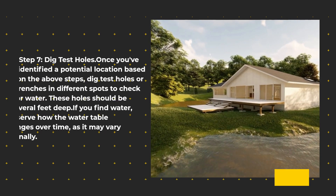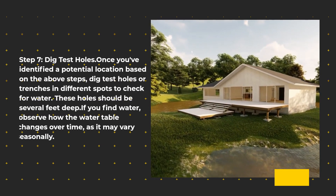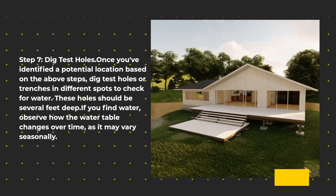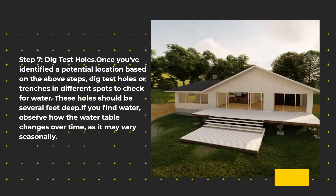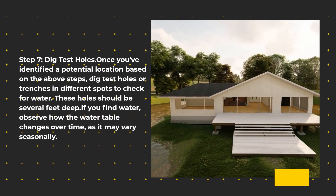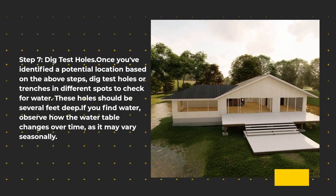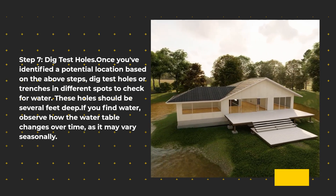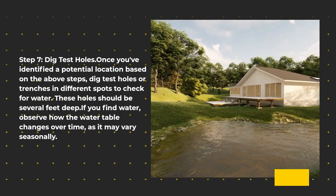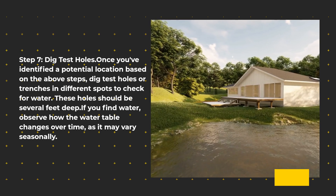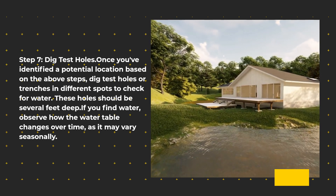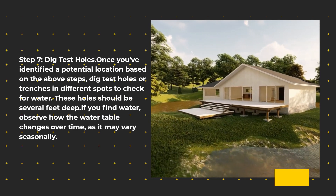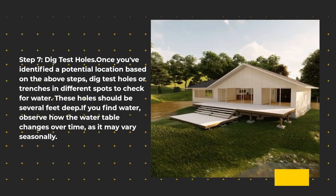Step 7: Dig test holes. Once you've identified a potential location based on the above steps, dig test holes or trenches in different spots to check for water. These holes should be several feet deep. If you find water, observe how the water table changes over time, as it may vary seasonally.